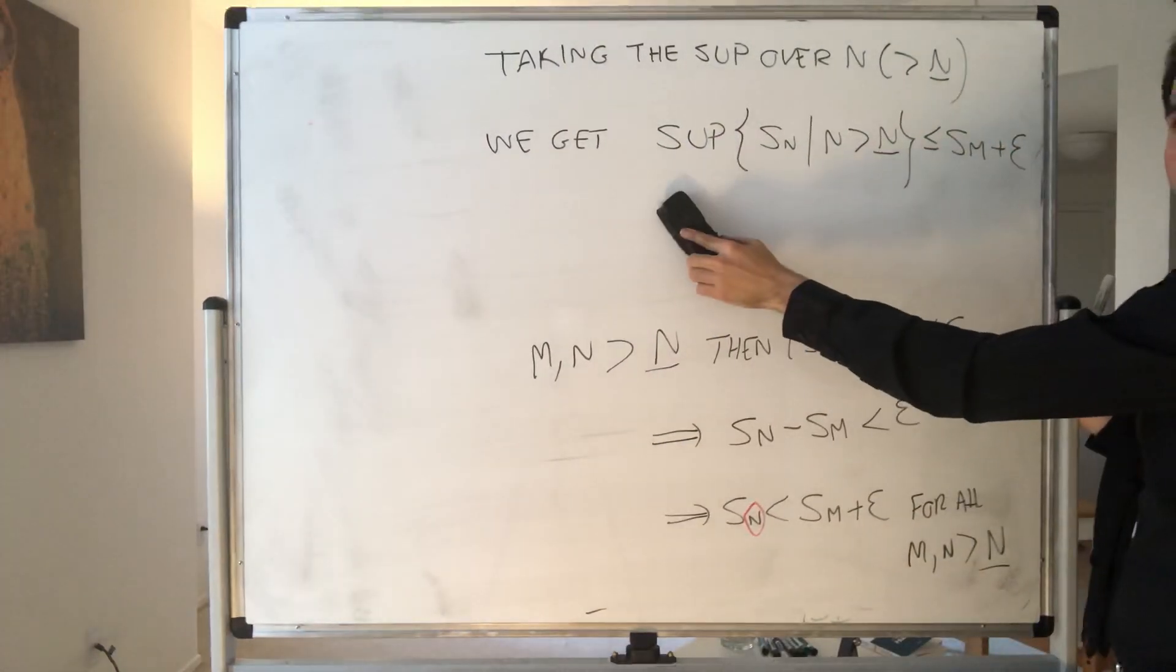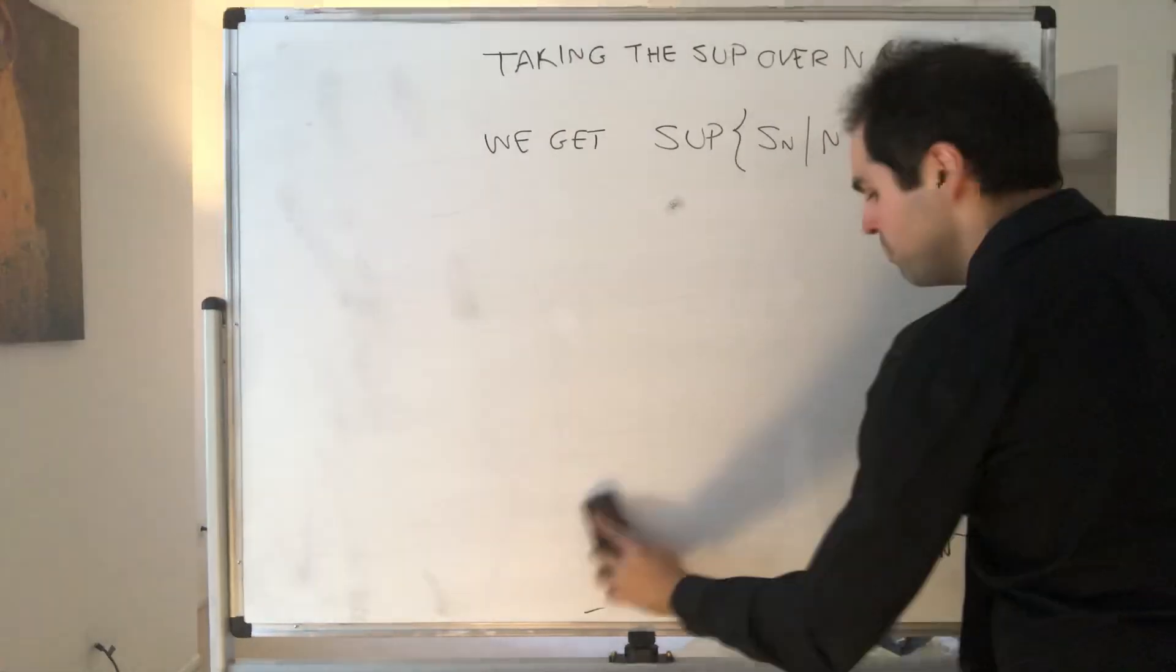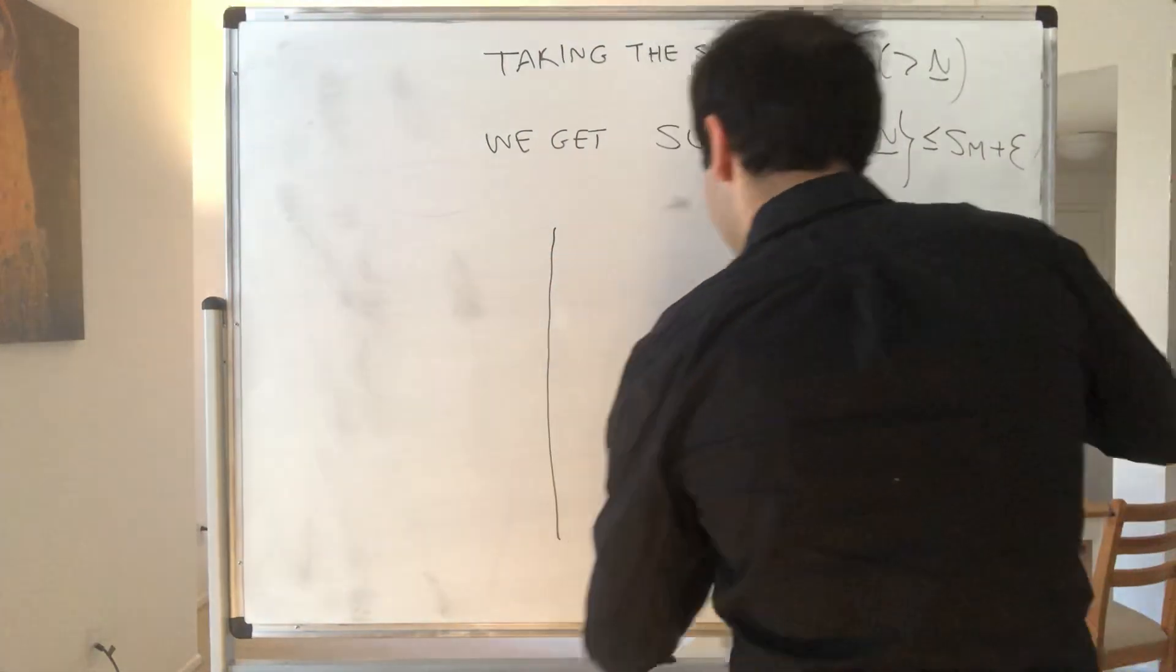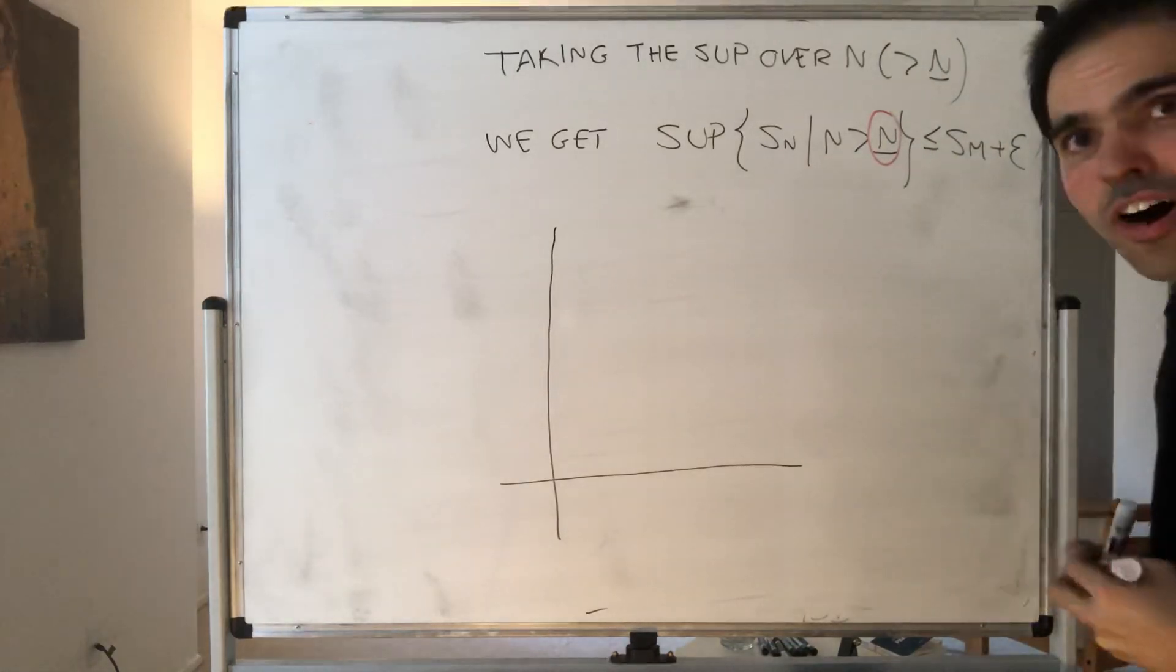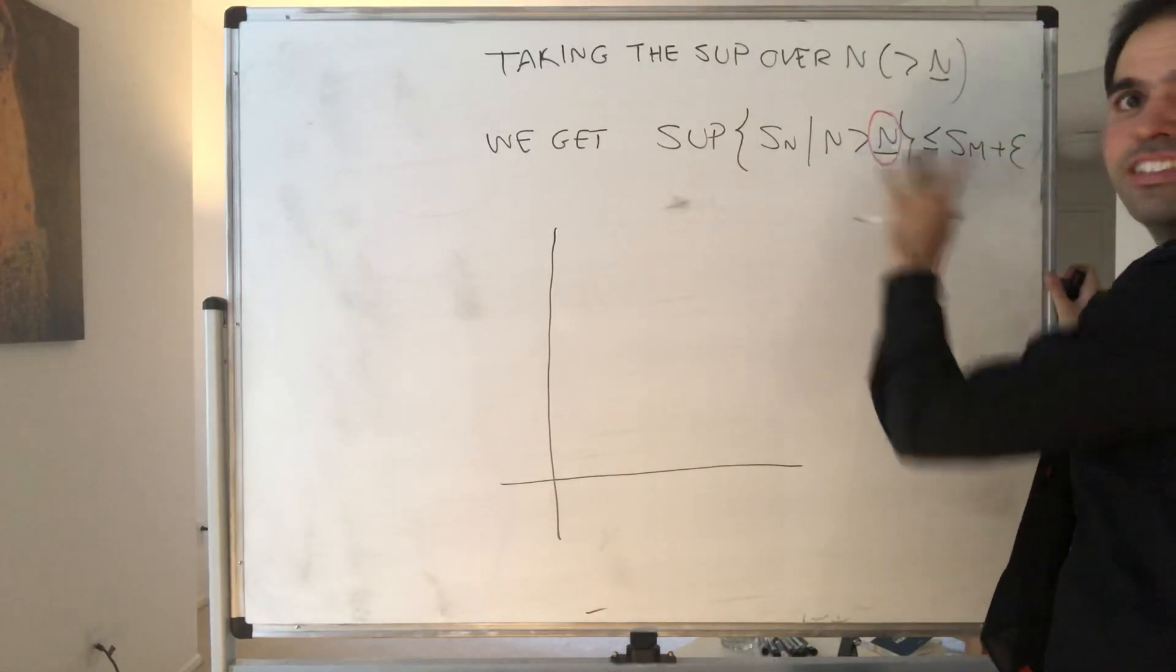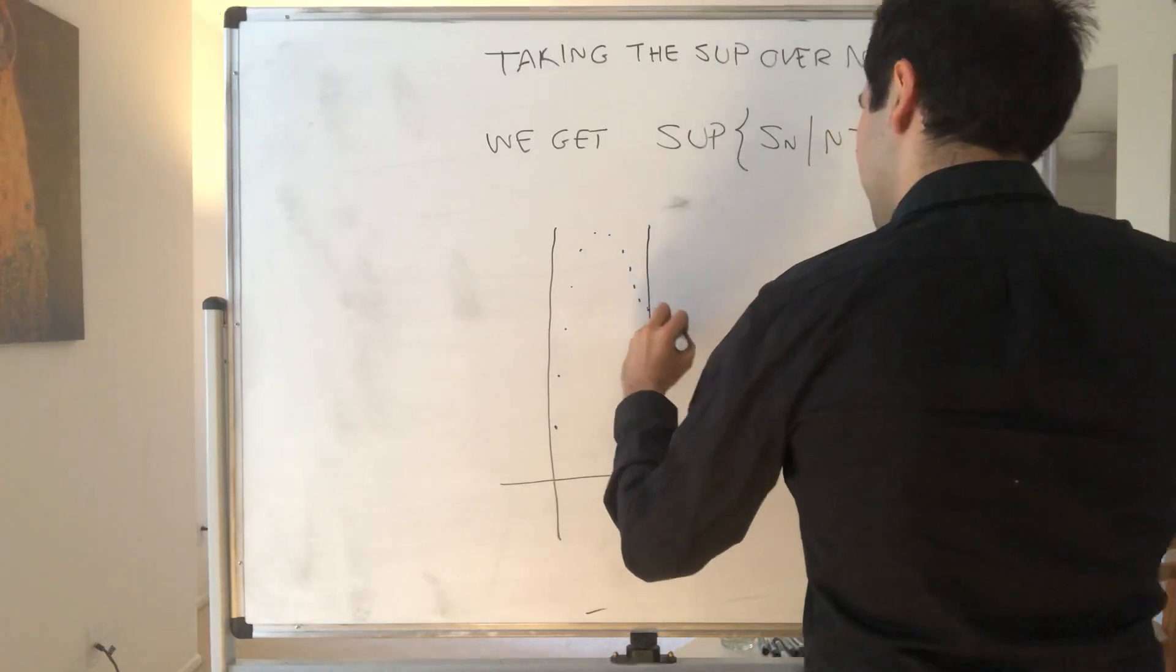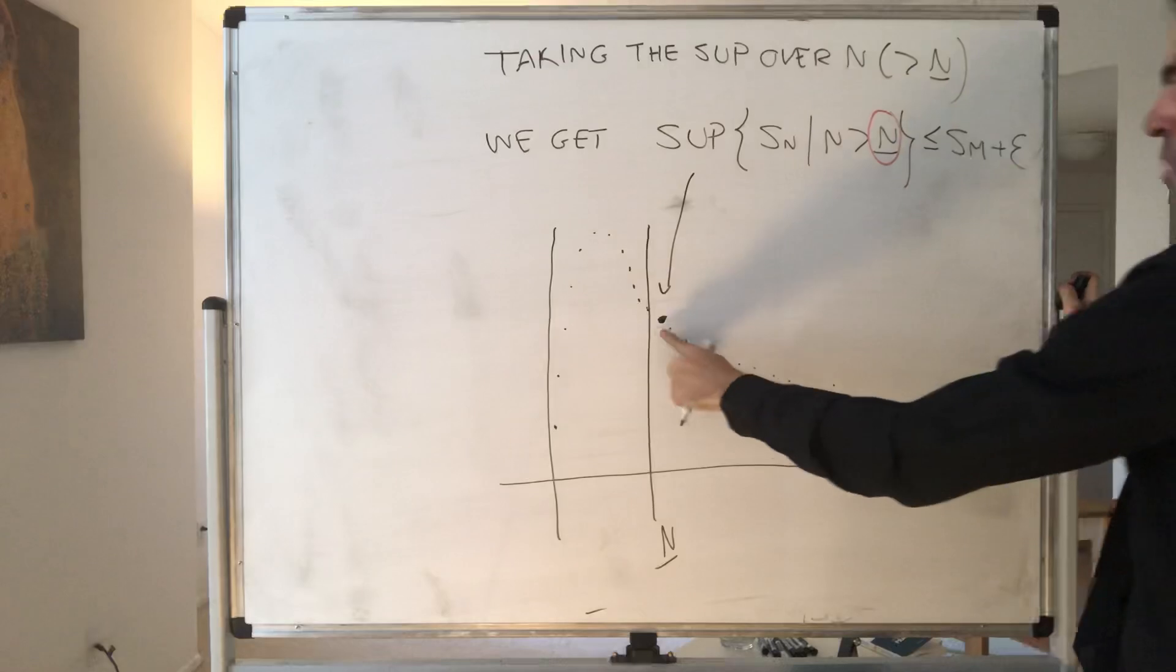And now, to get the lim sup, we would like to take capital N to infinity, but this is a problem because capital N depends on ε, so it's tricky. But we would like to use a special property of that supremum. Because notice, this supremum is decreasing in capital N. In other words, suppose you have your sequence like that. That supremum of Sn, where N is bigger than capital N, is here. But suppose you choose another one, N1, and take the supremum of Sn where N is bigger than N1. Notice, this is actually smaller than this one.